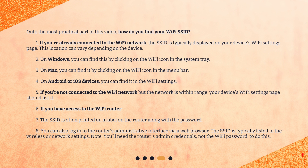If you're not connected to the Wi-Fi network but the network is within range, your device's Wi-Fi settings page should list it. If you have access to the Wi-Fi router, the SSID is often printed on a label on the router along with the password. You can also log in to the router's administrative interface via a web browser — the SSID is typically listed in the wireless or network settings. Note: you'll need the router's admin credentials, not the Wi-Fi password, to do this.